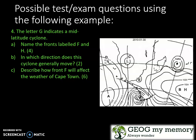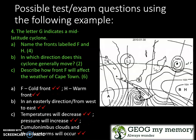The letter G indicates a mid-latitude cyclone. Name the fronts labelled F and H. In which direction does the cyclone generally move? And describe how front F will affect the weather of Cape Town. Answer: F is your cold front and H is your warm front.